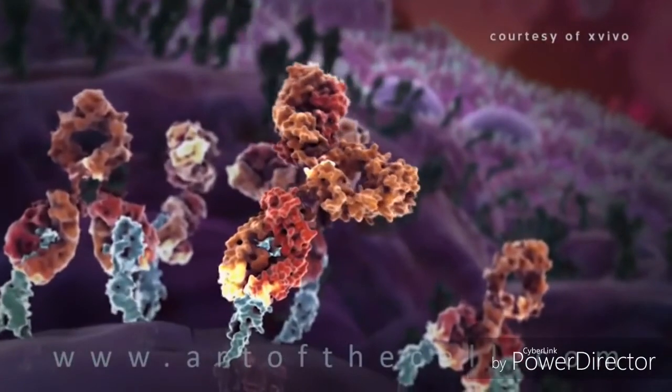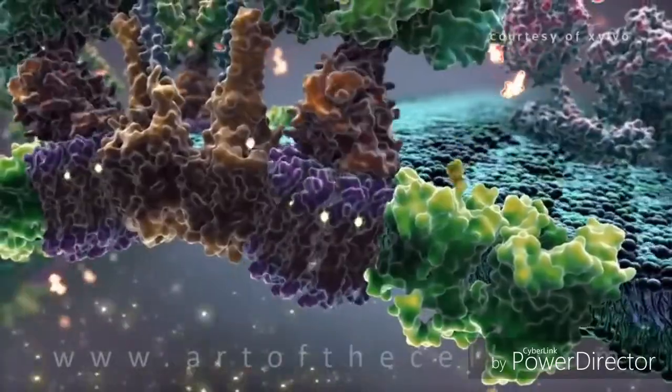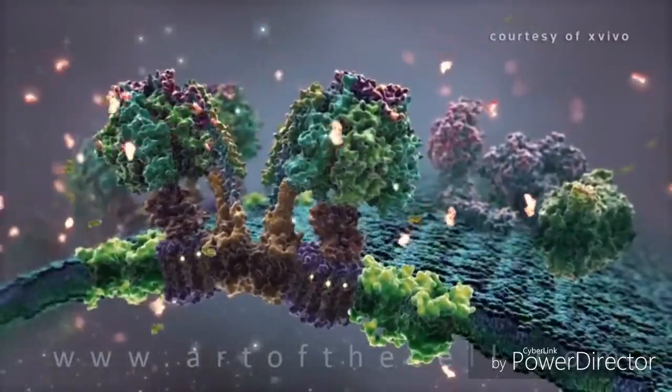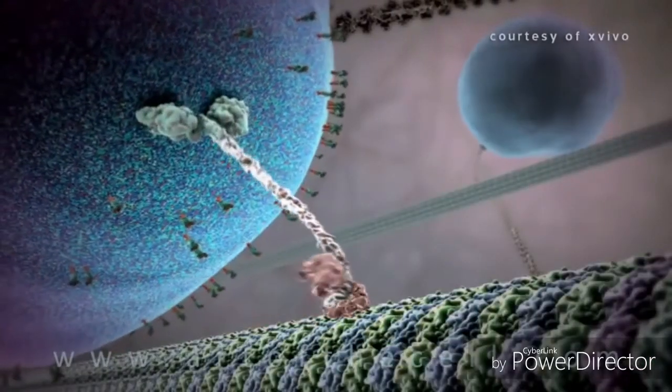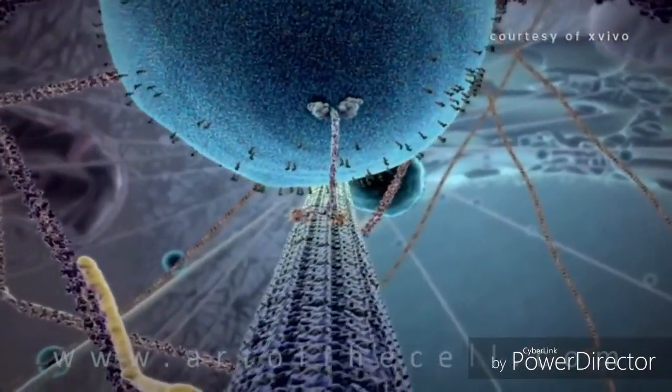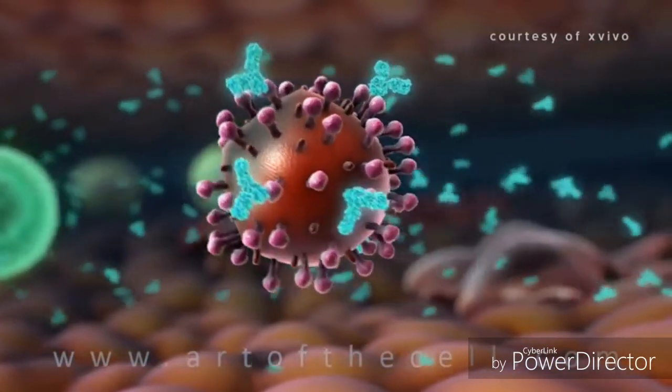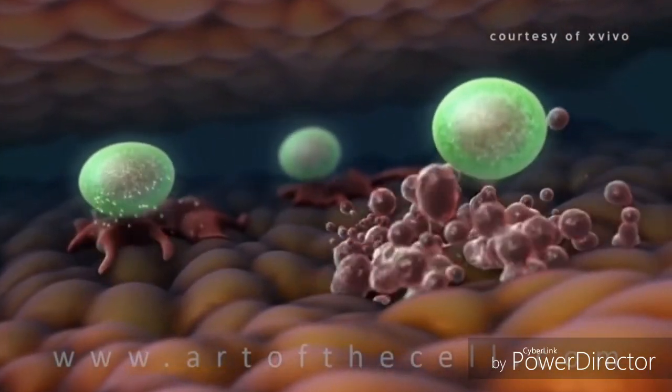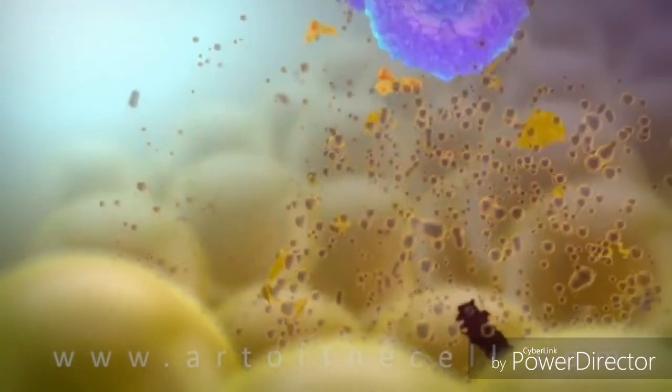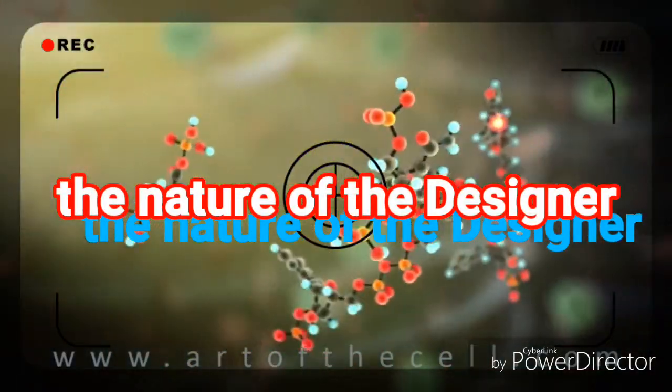One was the objection that DNA is not a code. It is by universal definition. Two, the objection that information is not real. It is because it produces real effects. Three, the objection that information has no objective meaning. It does because a message produces results just as objective and specific as the message itself. Four, the objection that random processes can create information. They can't. Five, the objection that codes do occur naturally. They don't. Six, the objection that the nature of the designer cannot be determined. In very broad terms it can.